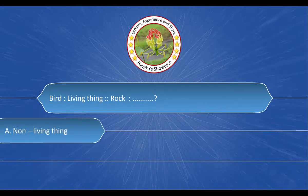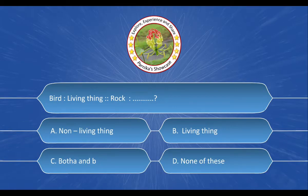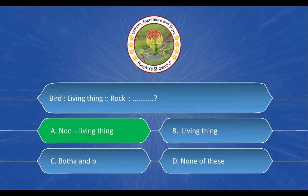Next question: bird is a living thing; rock is dash dash. The options are: a) non-living thing, b) living thing, c) both a and b, d) none of these. The correct answer is option a) non-living thing.